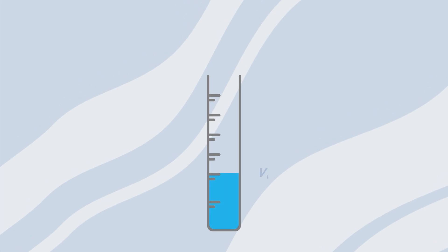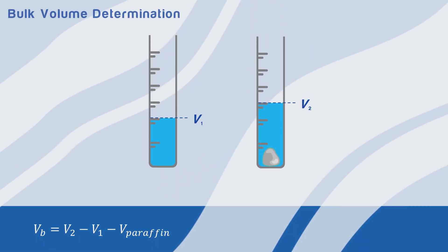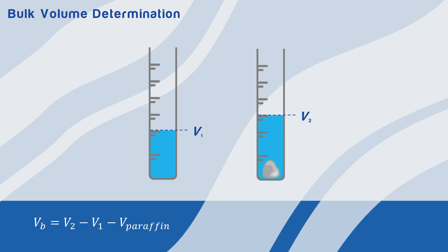In the first method, we can record the initial volume of water in the graduated cylinder V1. Then, we can record the new volume of water after submerging the rock V2. The difference between the new volume and the initial volume is the volume of the coated rock.